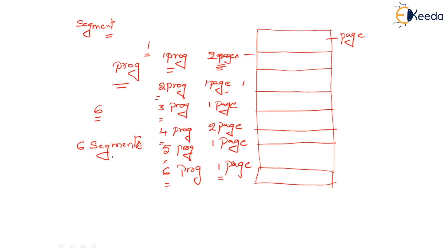What is the segment? The segment is a logical entity which is going to contain one exact program in it. The size of the segment is just the size required by the program to get stored. Now you can clearly see the number of segments will vary. At this point I stored six programs, so the total number of segments required is six. Tomorrow, if I delete all programs and reload with just three, the number of segments will always be variable because the number of programs stored in the fixed pages will always vary. This is the concept of segments.